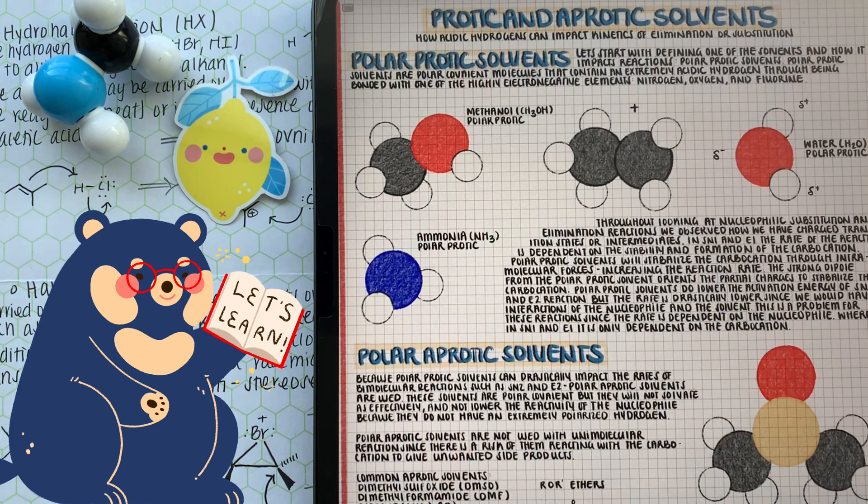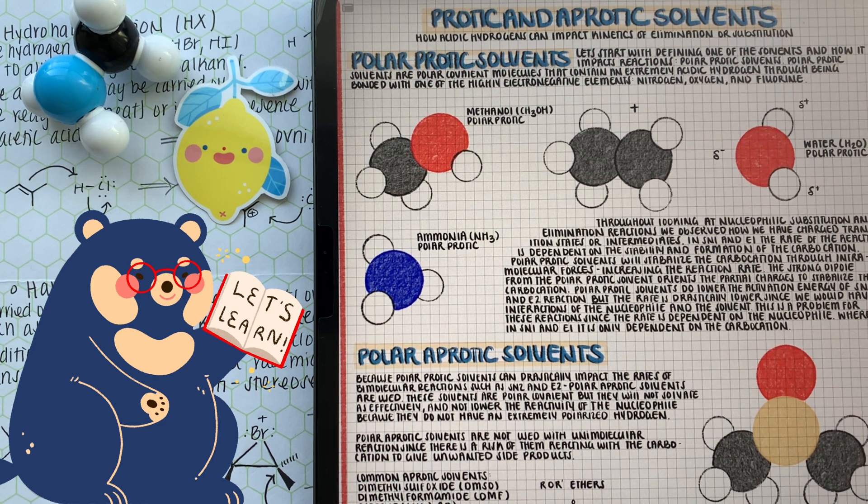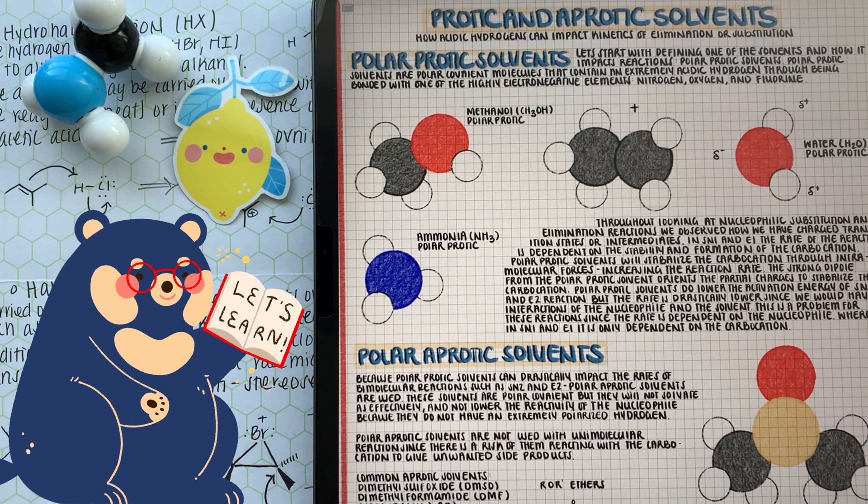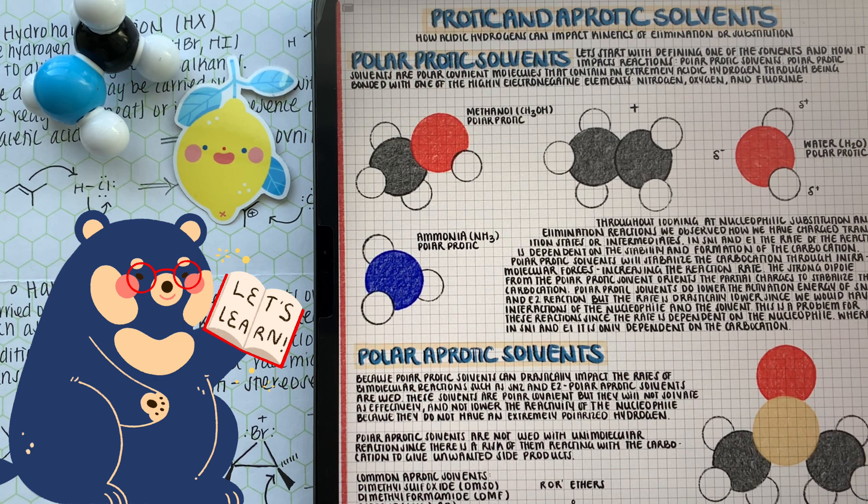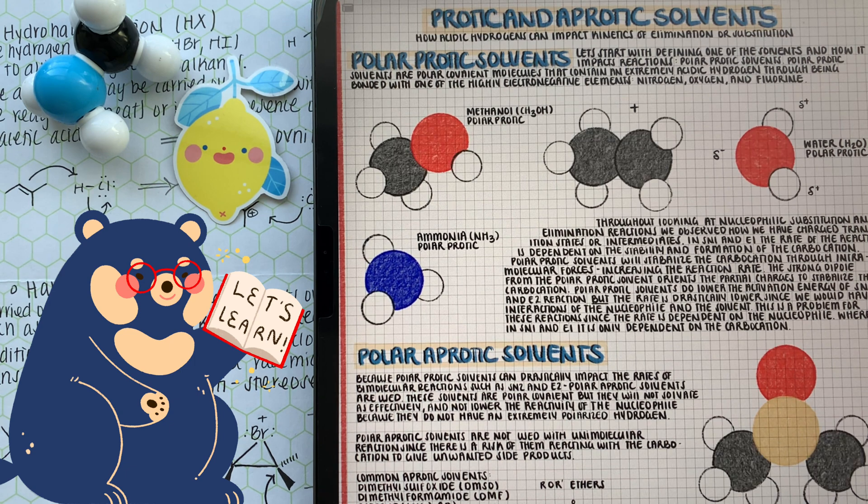We're talking about the different variables we just mentioned: the nucleophile, the leaving group. We know we have intermediates and transition states. So the different types of solvents we use throughout these reactions can be beneficial or hurt the reaction pathway. For example, we know that when we do SN2 and E2 reactions, we have strong bases and strong nucleophiles. We wouldn't want to use a polar protic solvent because our nucleophile or our base would just react with the acidic hydrogen of the solvent.